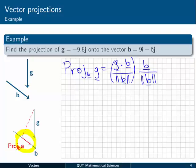Now it's just a matter of calculating all of these values. First up, there is no i component in g. So the first part of g dotted with b will be zero. Then we have minus 9.8 times minus 6, which gives us 58.8.